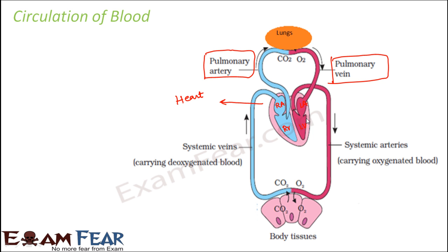Once it enters the left auricle, it flows to the left ventricle when the valve opens, and from the left ventricle it goes through the arteries carrying oxygenated blood to different parts of the body. This picture represents the process of double circulation. This movement of blood through all four chambers happens due to the appropriate opening and closure of the various valves.